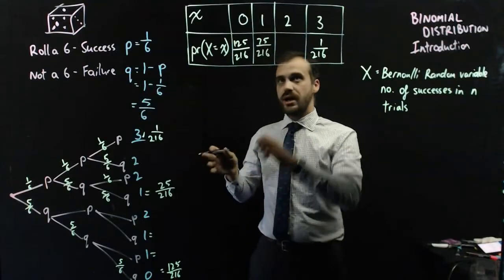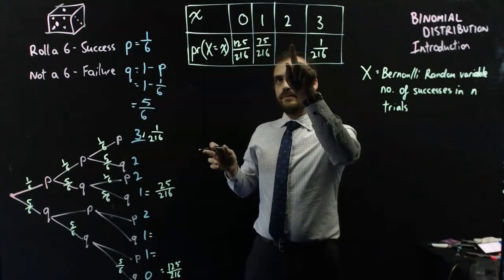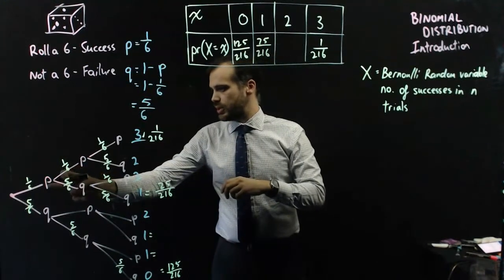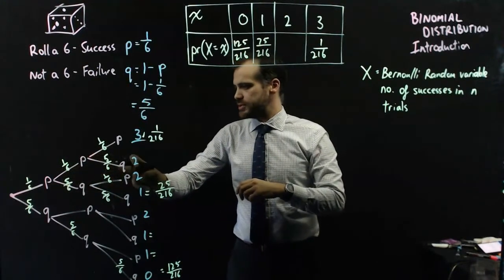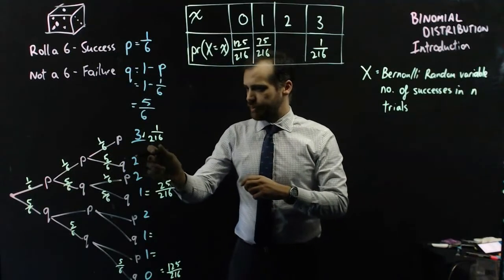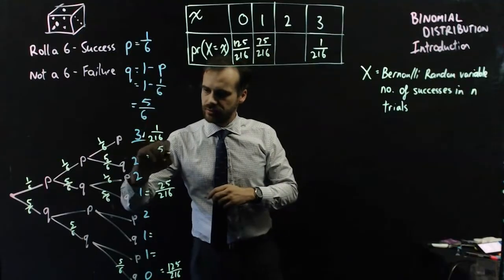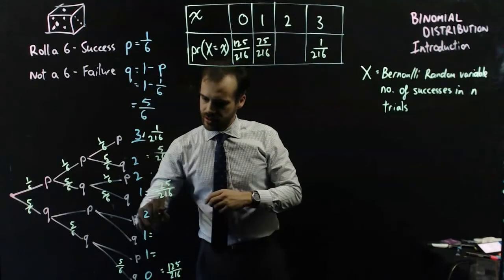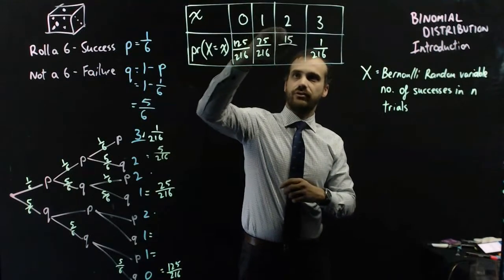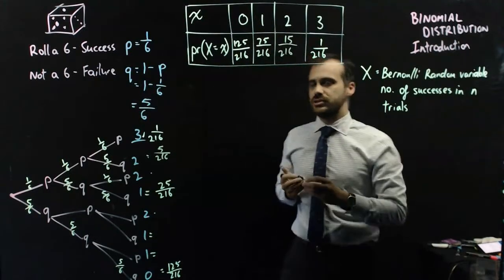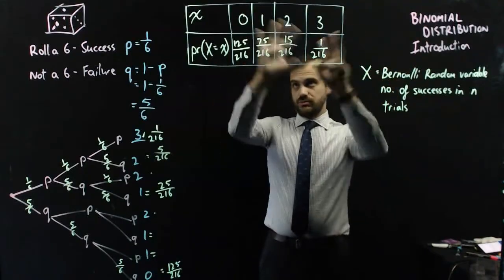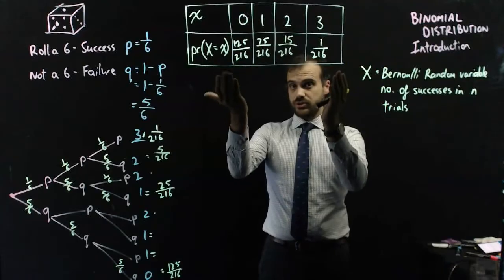Finally, we have our 2 successes and 1 failure. 1/6, 1/6, 5 in 6. That's 5 in 216. And it happens here, here, and here. Add them together, and we get 15 out of 216. That is a binomial distribution, right there.